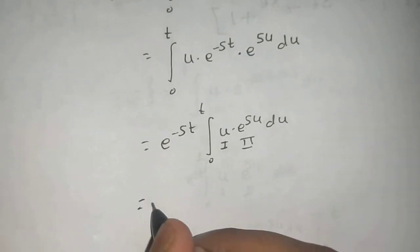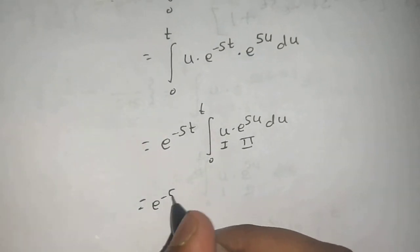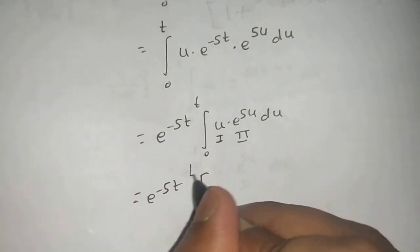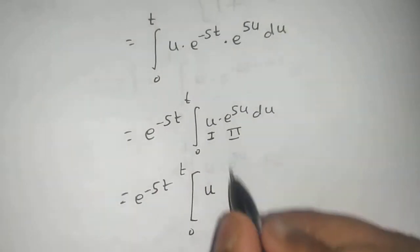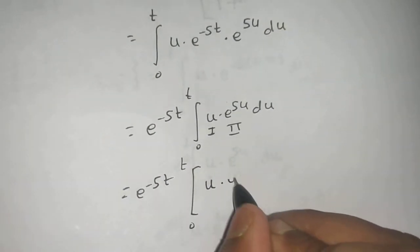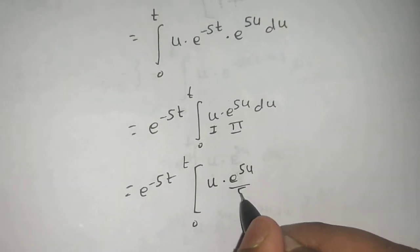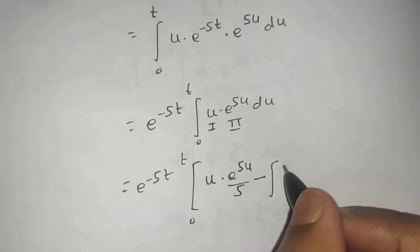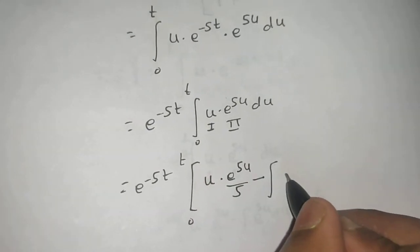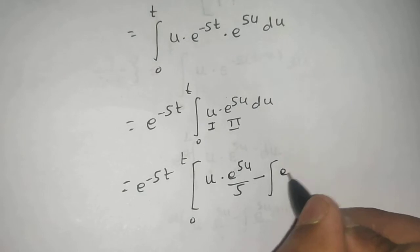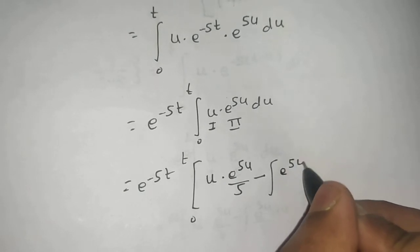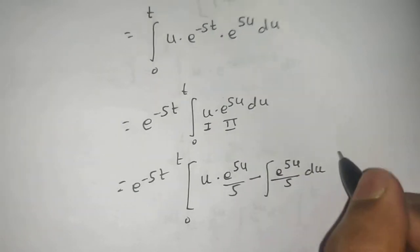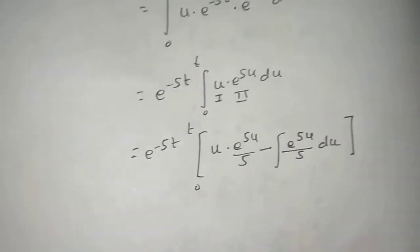We apply integration by parts to the integral from 0 to t of u times e^(5u) du, with u as the first function and e^(5u) as the second. This gives: first function as-is times the integral of e^(5u), which is e^(5u)/5, minus the integral of the derivative of u — which is 1 — times e^(5u)/5.